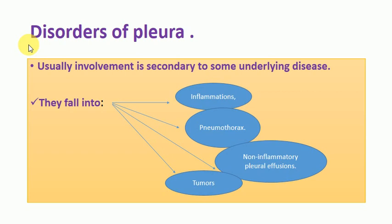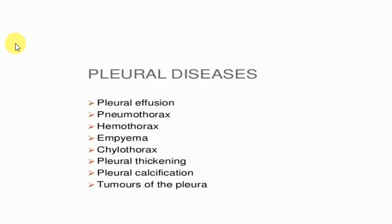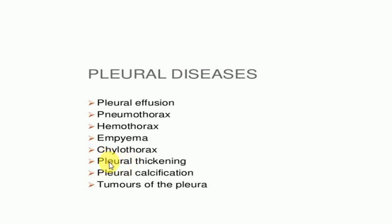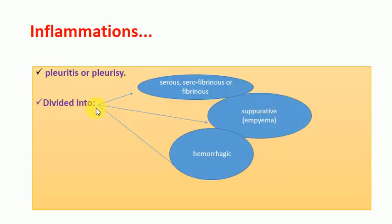For example, pneumonia and tuberculosis can lead to pleural disease. The key types of pleural conditions include: pleural effusion (fluid accumulation), pneumothorax (air in the pleural cavity), hemothorax (blood accumulation), empyema (pus accumulation), chylothorax (accumulation of chyle or lymphatic fluid), pleural thickening, pleural calcification, and tumors affecting the pleura.